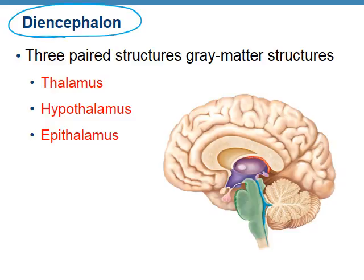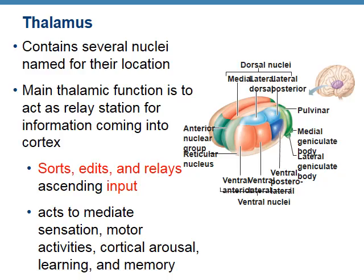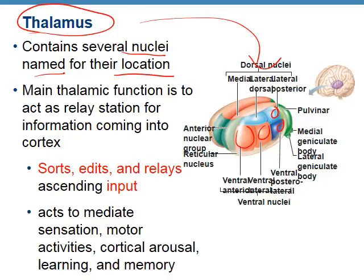Now we'll talk about the diencephalon — its three parts: thalamus, hypothalamus, and epithalamus. The thalamus is the main section; off of it is the hypothalamus; and the back section is the epithalamus. Remember, epi means on top and hypo means below, but due to the brain's folding during development, the order appears differently. The function of the thalamus is to act as a relay station for information to and from the cerebral cortex — it sorts, edits, and relays information.